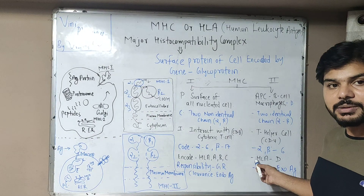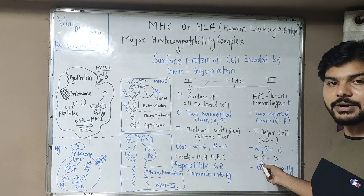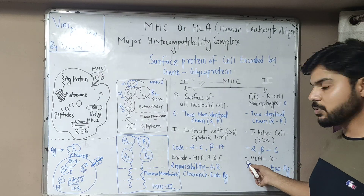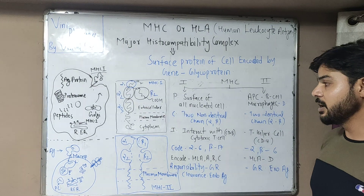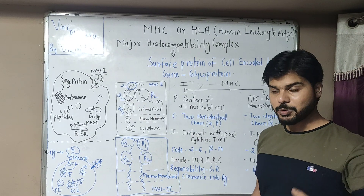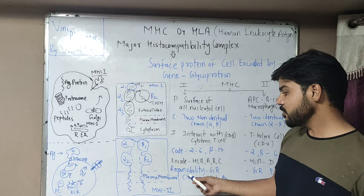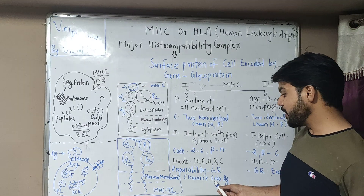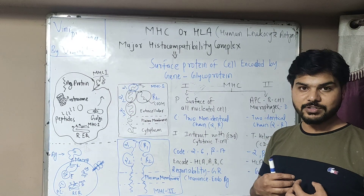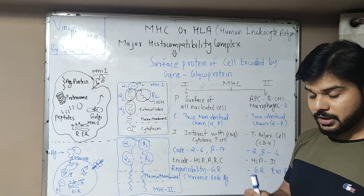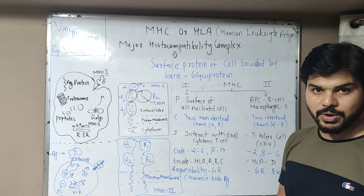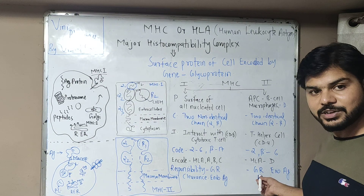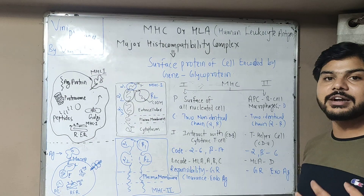When we talk about MHC Class 2 complex, it is encoded by HLA-D. MHC Class 1 is responsible for graft rejection and the clearance of endogenous antigens — internal antigens from infections inside the body. MHC Class 2 also works for graft rejection and handles exogenous antigens from outside.